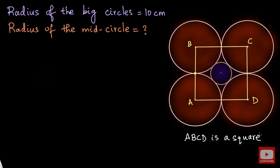How can I claim this? As you can see, each radius of the big circle is 10, so each side of quadrilateral ABCD equals 10 plus 10, which is 20. All four sides are 20. But we cannot say it is a square just because of that, since a rhombus also has all equal sides. To prove it is a square, I will take the help of the diagonals.